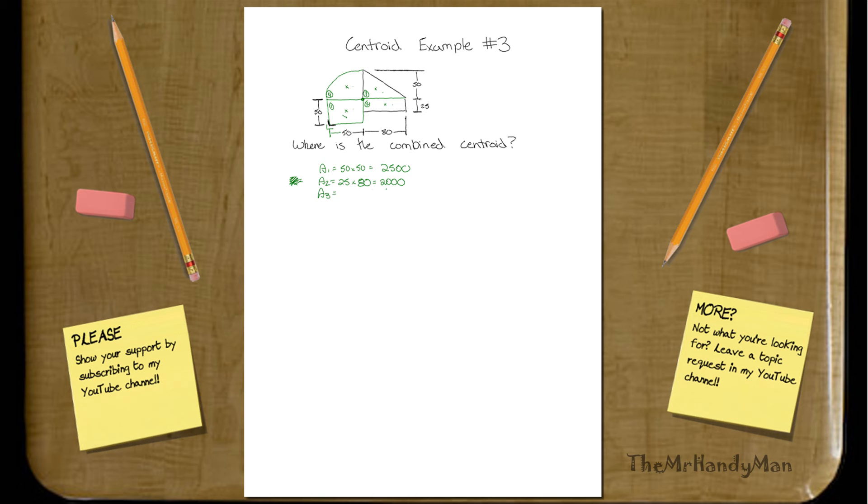And then you have your A3, which is going to equal 50 times 80 times 1 half. So 50 times 80 times 0.5, that's also 2,000. And then lastly, you have your area of 4, which is going to be pi r squared. That's pi times the radius, which is going to be 50 squared divided by 4. So 50 squared times pi divided by 4, you're getting in the vicinity of 1963. So now you have all your areas. You can see that they're all pretty comparable to each other, so you should see a nice little averaging effect.